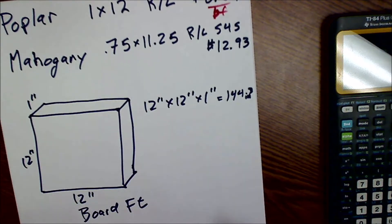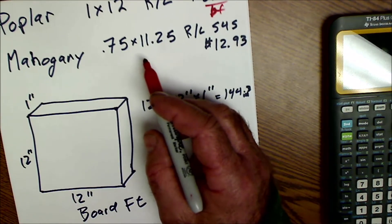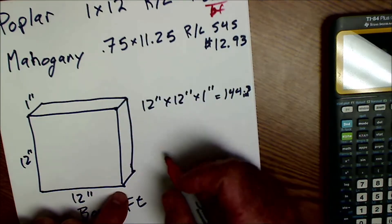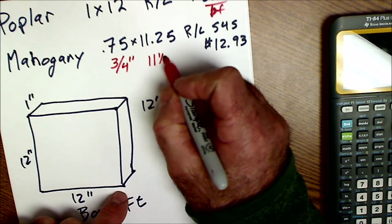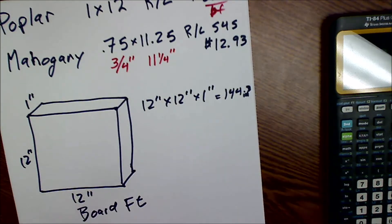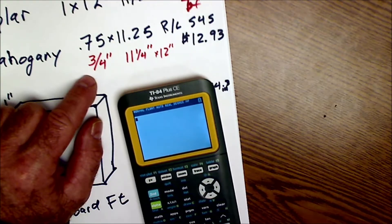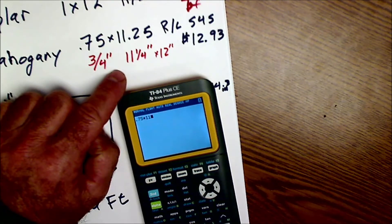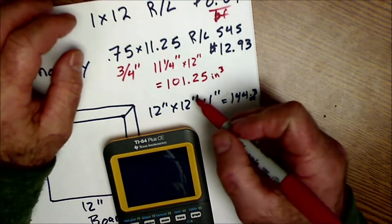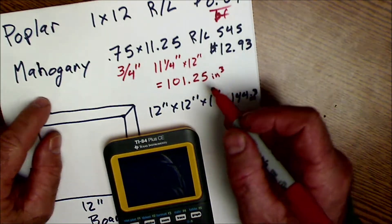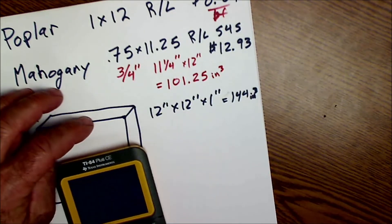But now let's take a look at one a little more complicated like this mahogany. So I'm going to have to figure out the dimensions of one linear foot of it. So it's going to be three quarters and 11 and a quarter. Those are the given dimensions. And I'm going to buy one linear foot of it, so I'm going to multiply that by 12 inches. I use my calculator here. I'm going to take 0.75 times 11.25 times 12, and that gives me 101.25 cubic inches.